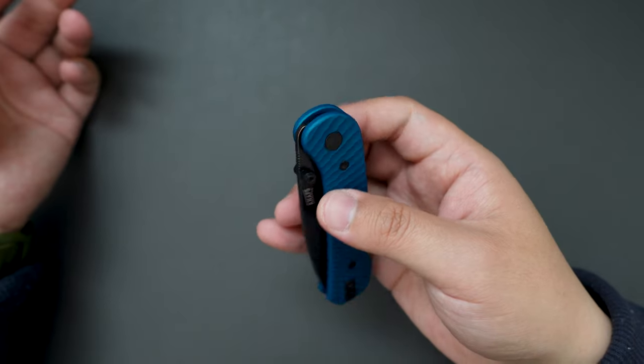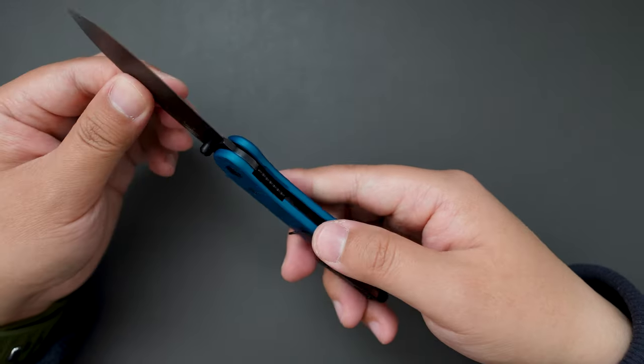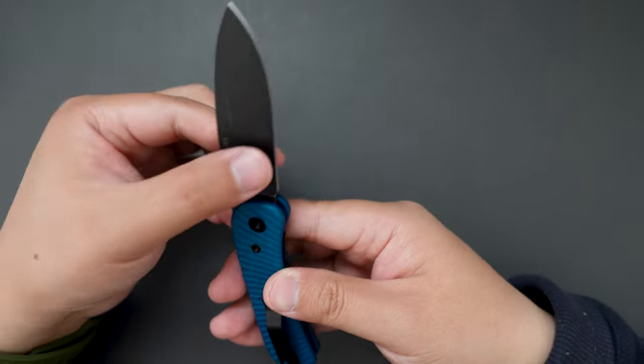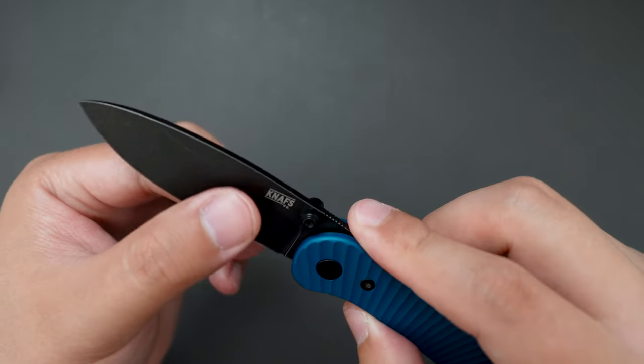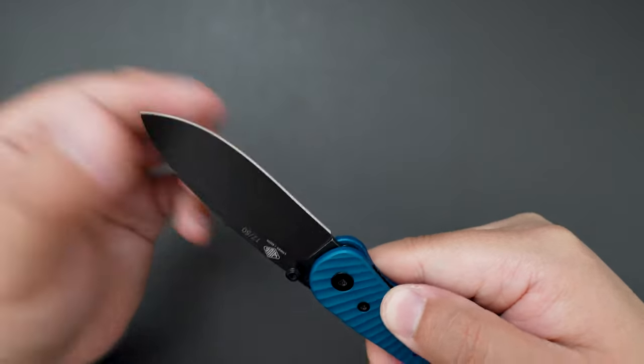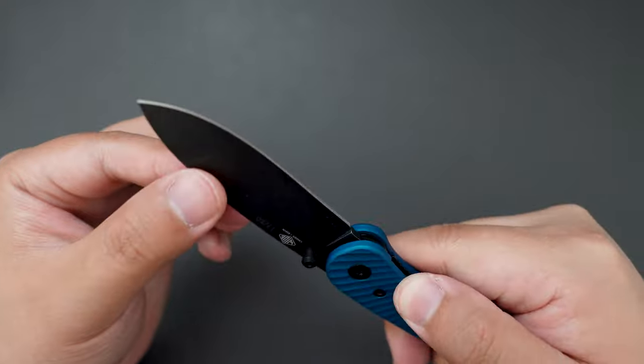Let's give it a flick. Super snappy action. And this one is a liner lock. I think it's a stonewashed blade. Full flight line. Very cool.